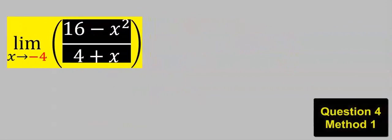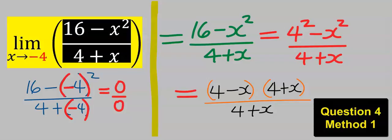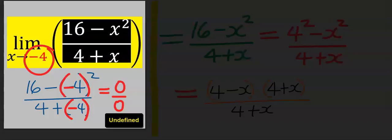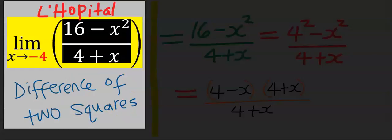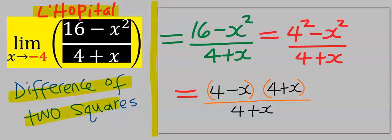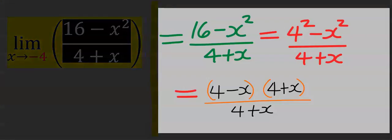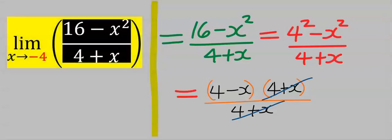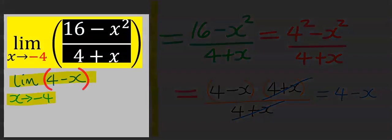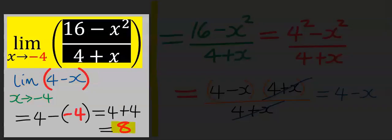Consider this next question. In this problem, if you plug in x equal to minus 4, you will get 0 over 0. Hence, we apply L'Hôpital's rule by applying the difference of two squares. This cancels, and you are left with 4 minus x. Taking the limit as x tends to minus 4, the answer is 8.